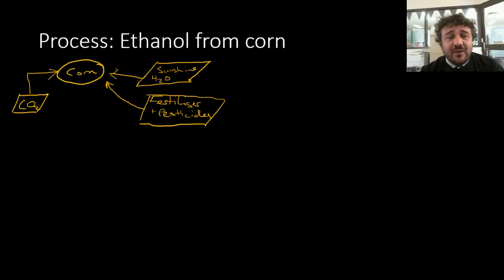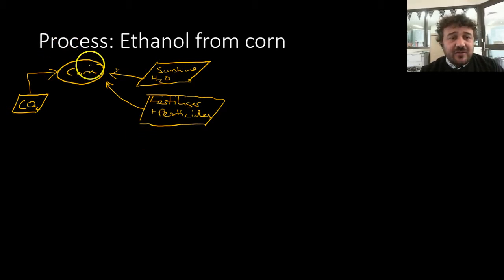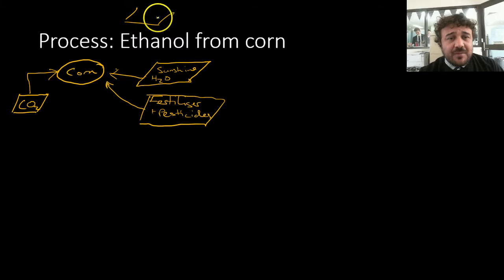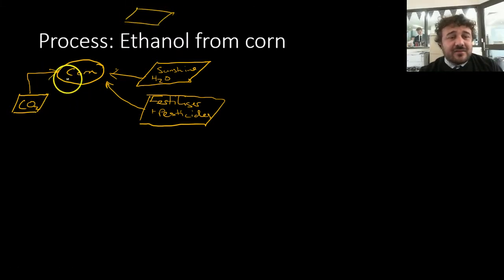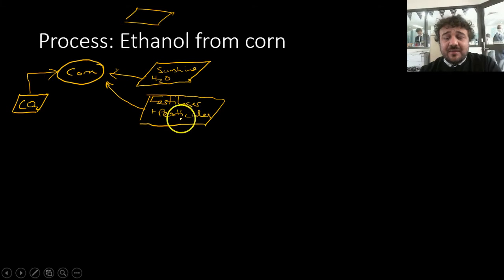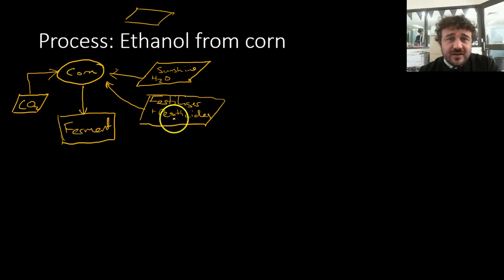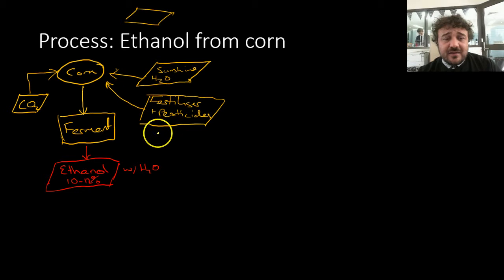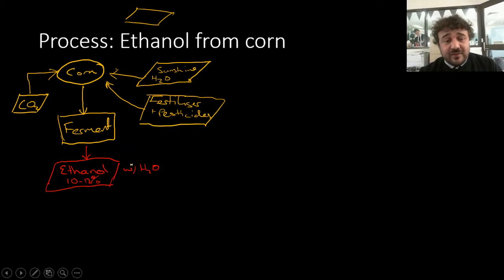Let's have a look at the process. Here we're going to use the right shapes for a flow chart. We start off with corn and we have three inputs — that's why it is shaped like this, the shape of an input, a parallelogram. Carbon dioxide goes in, sunshine, H₂O — that's what gives us photosynthesis. You also have to input fertilizer and pesticides. To get the sugar out, which is then fermented, you get ethanol roughly 10 to 12% with water — so the rest is water.